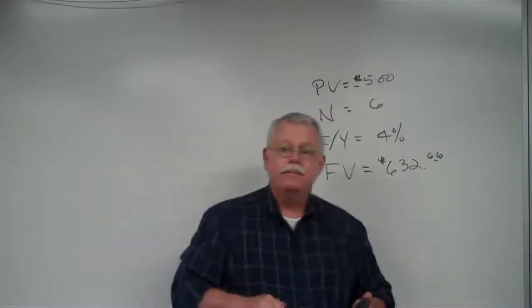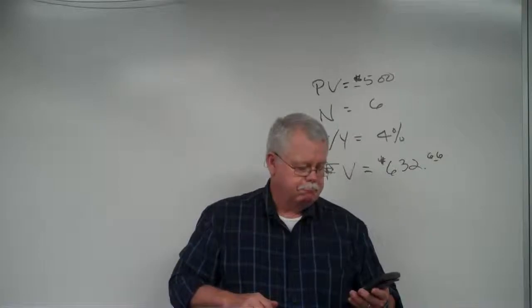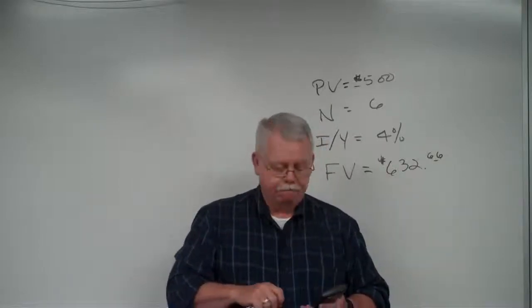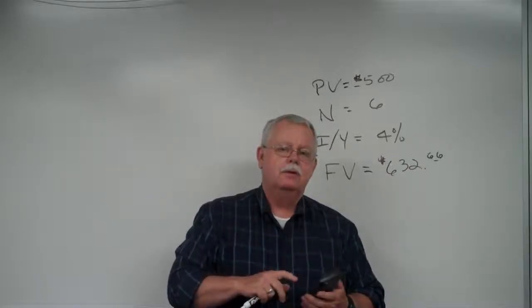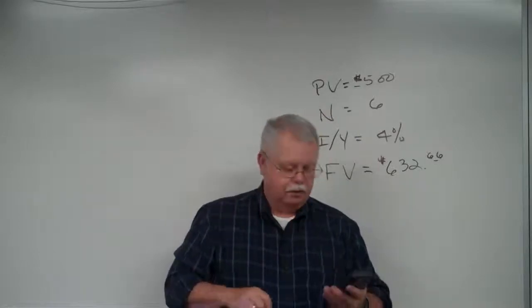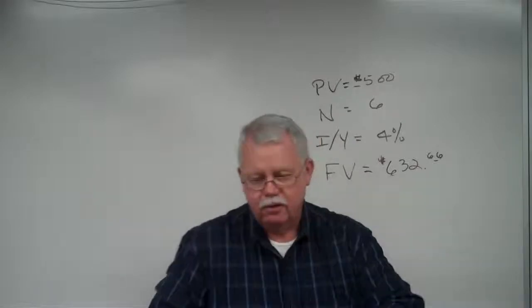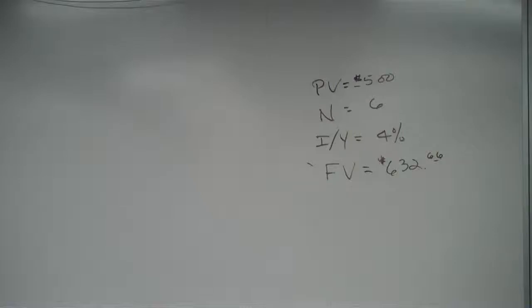Some students are getting a different answer. If your calculator is displaying only two decimals, that could cause discrepancies. To fix that, use the second-format function and specify how many decimals you want — set it to four decimals for better precision.